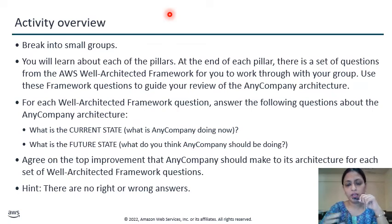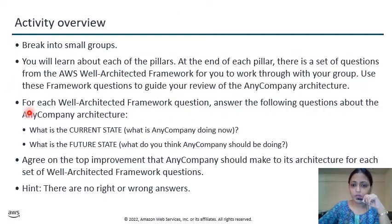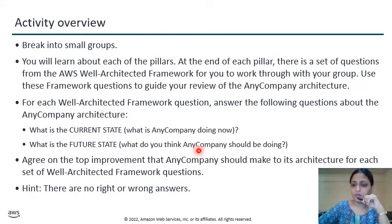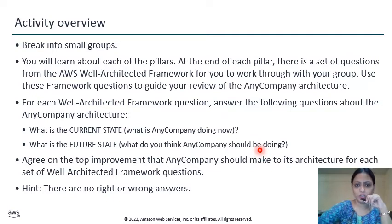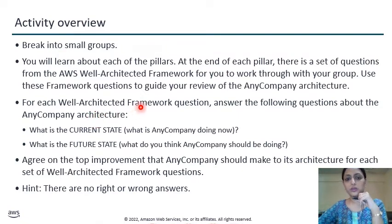In the first part, you need to break all things into small groups. After that, understand all six pillars of AWS. Each architecture consists of all six pillars and you need to connect the AWS framework with your group, so you can use that framework for guiding the review of any company architecture. For every well-architected review, you need to answer questions like: what is the current state of the company, and what should the future state be?